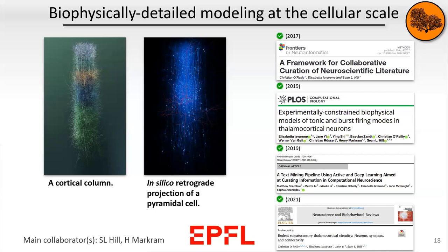On the slide, you can see on the left side an example of what these models look like — here it's for a cortical column. These models can be used to do what we call in silico experiments. For example, the second figure here is a depiction of retrograde labeling of all the cells connected to the central pyramidal cells in this cortical column. That's a kind of experiment you could do in the lab, and you would have a similar image through experimental means — but here you can reproduce it completely in a computer.